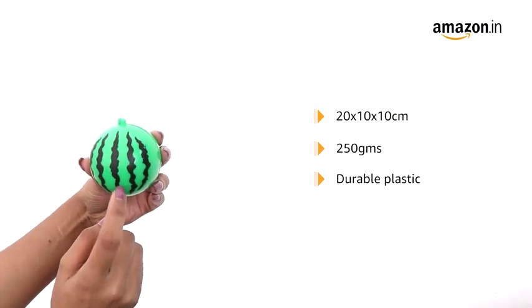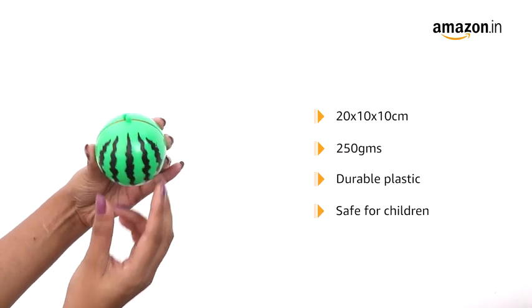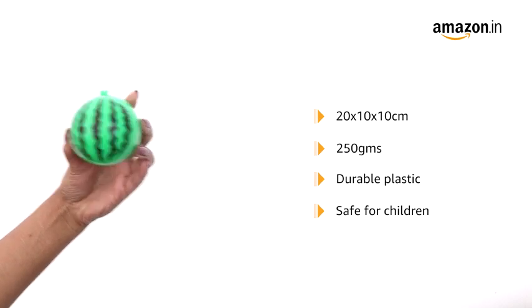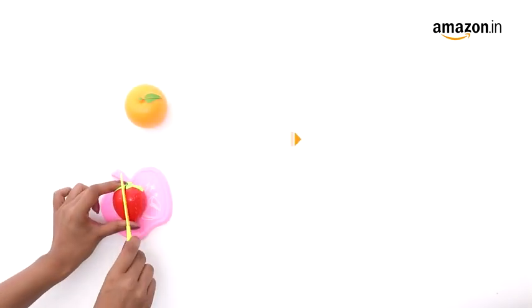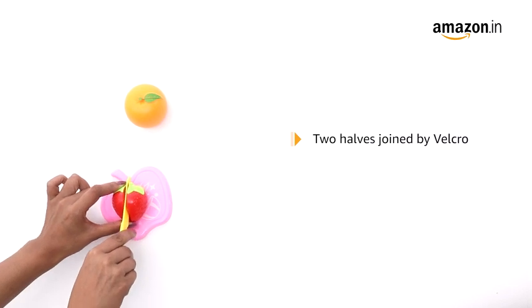The contents are all made from durable plastic and completely safe for babies and toddlers to play with. All the fruits and vegetables are made of two halves joined by Velcro.